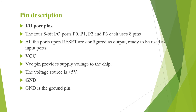Next are the IO port pins: the 4 eight-bit IO ports — port 0, port 1, port 2, and port 3 — each using 8 IO pins. All these ports upon reset will be configured as output, else they can readily be used as input ports. VCC provides the supply voltage of +5V to the chip. GND is the ground pin.